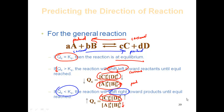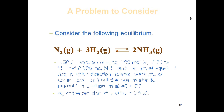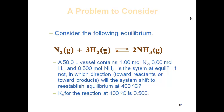The reaction will shift until it reaches equilibrium, at which point the rates are equal again. Let's look at an example to predict which way a reaction will shift. We have nitrogen gas plus hydrogen gas giving ammonia gas. A 50-liter vessel contains 1 mole of nitrogen, 3 moles of hydrogen, and 0.5 moles of ammonia. Is the system at equilibrium? If not, in which direction will it shift to re-establish equilibrium at 400°C, given KC = 0.500?